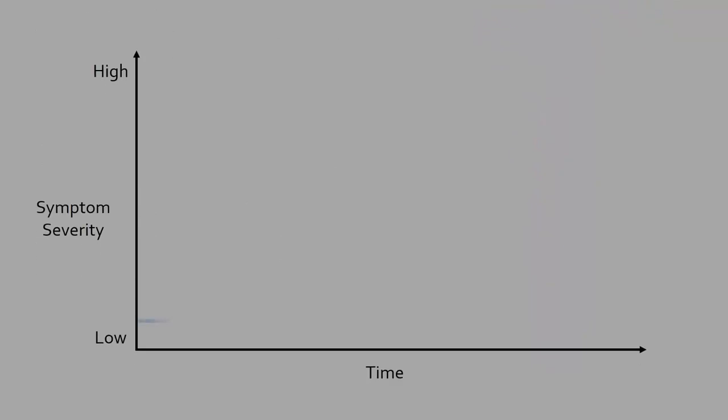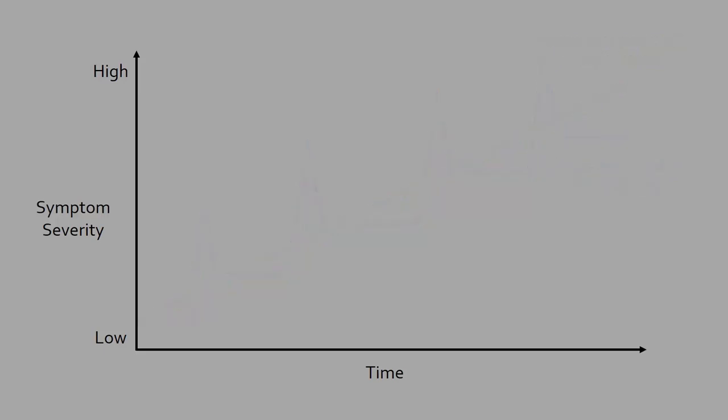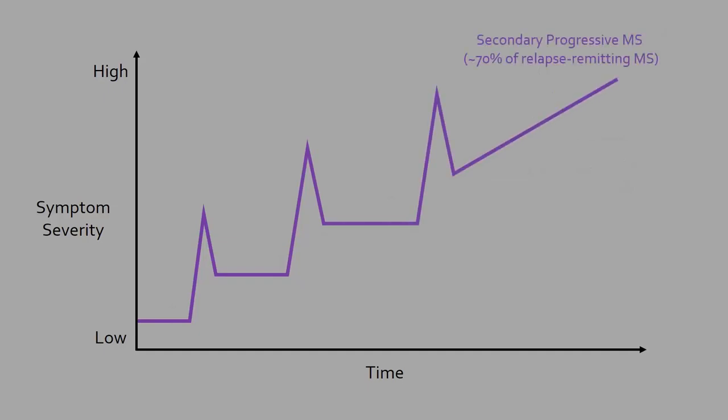In most cases, symptoms happen in brief attacks, known as relapse-remitting MS. While in others, symptoms are constantly present and progressively get worse, known as primary progressive MS. 70% of people who start off with relapse-remitting MS may eventually develop progressive MS, known as secondary progressive MS.